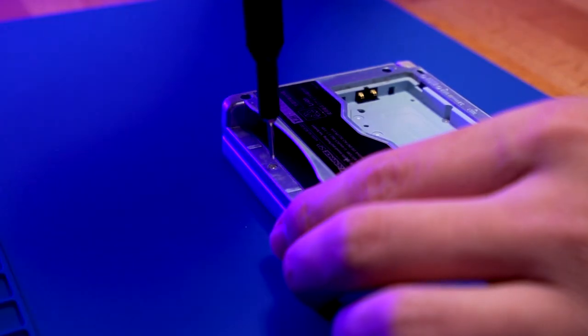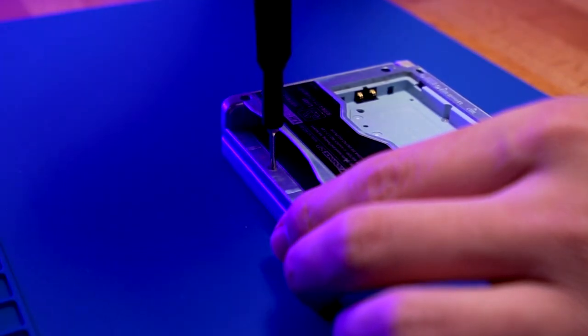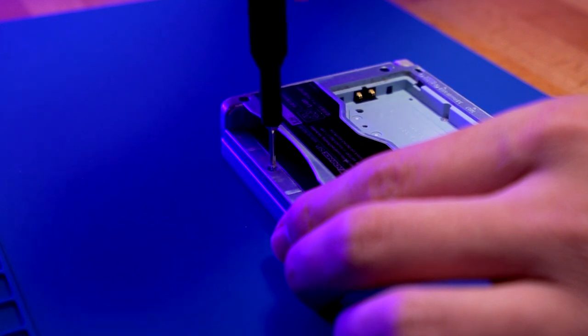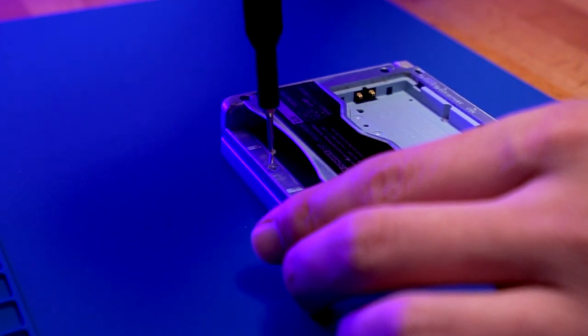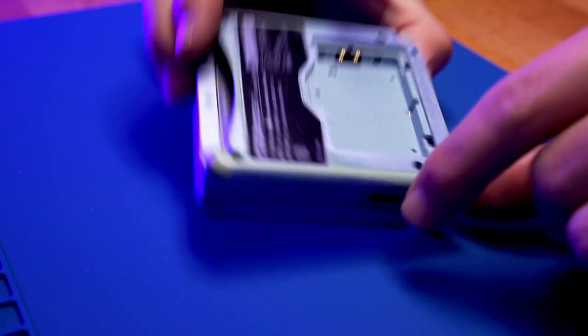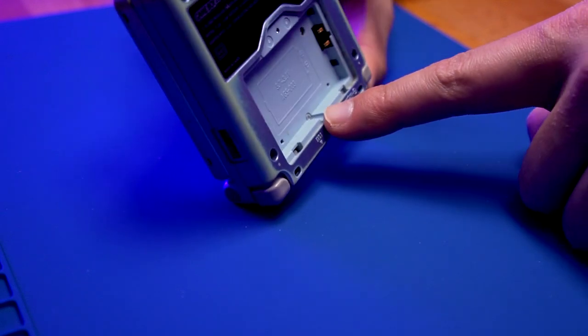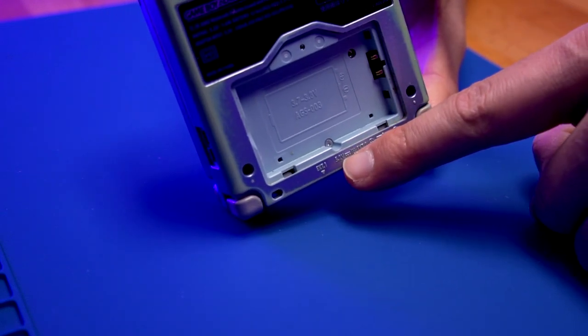Now we're going to remove the two additional Tri-Wing screws, one by the cartridge slot and the last one is in the battery compartment at the bottom right there. Go ahead and remove that.